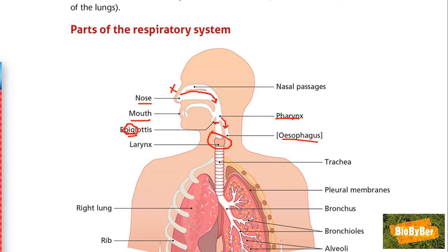The larynx is located in your neck, also known as your Adam's apple. The larynx has vocal cords which move or vibrate as the air travels up and down from your lungs. Then there is your windpipe or trachea — the trachea is covered with little rings of cartilage which help to keep it open so that air can travel.